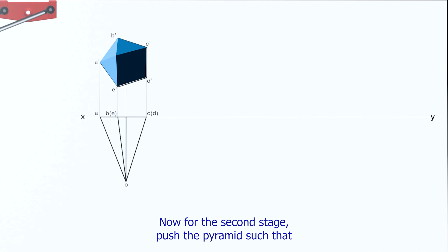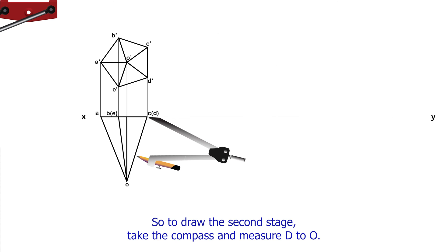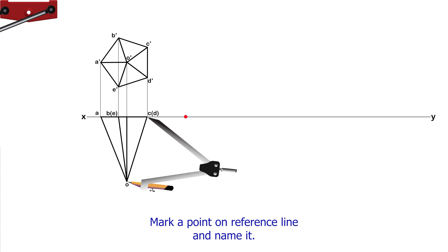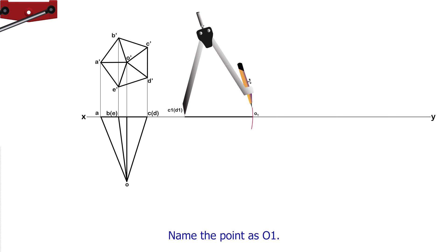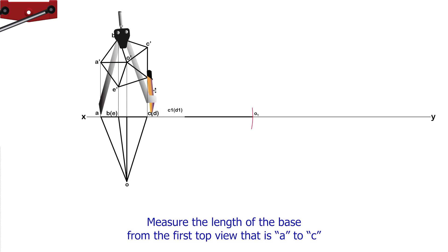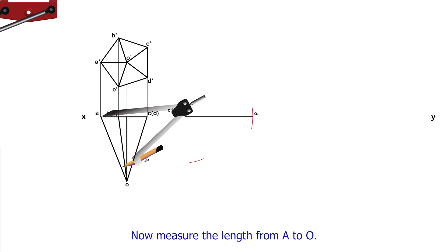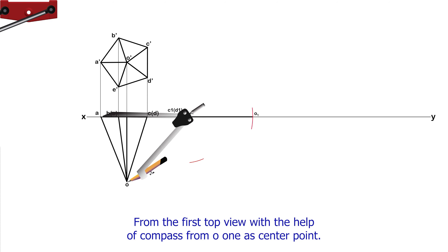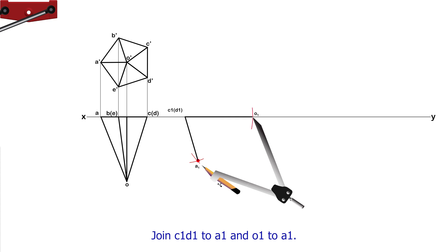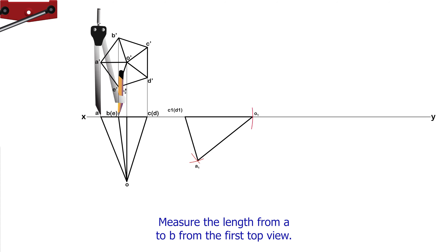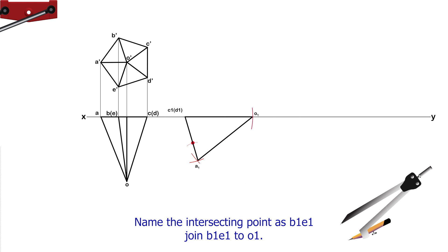For the second stage, push the pyramid so that it rests on one of its triangular faces on the vertical plane. Take the compass and measure D to O. Mark a point on the reference line and name it C1D1. Put the needle of the compass at C1D1 and cut the arc; name this point O1. Measure the length of the base from the first top view — that is, A to C — and from C1D1 as center, cut the arc. Then measure the length from A to O from the first top view. From O1 as center, cut the arc and name the intersecting point as A1.